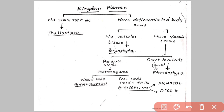Angiosperms have further divisions: monocot and dicot. Monocot means a single cotyledon — for example, rice has a single cotyledon. Dicot means double cotyledon — for example, wheat has double cotyledon.